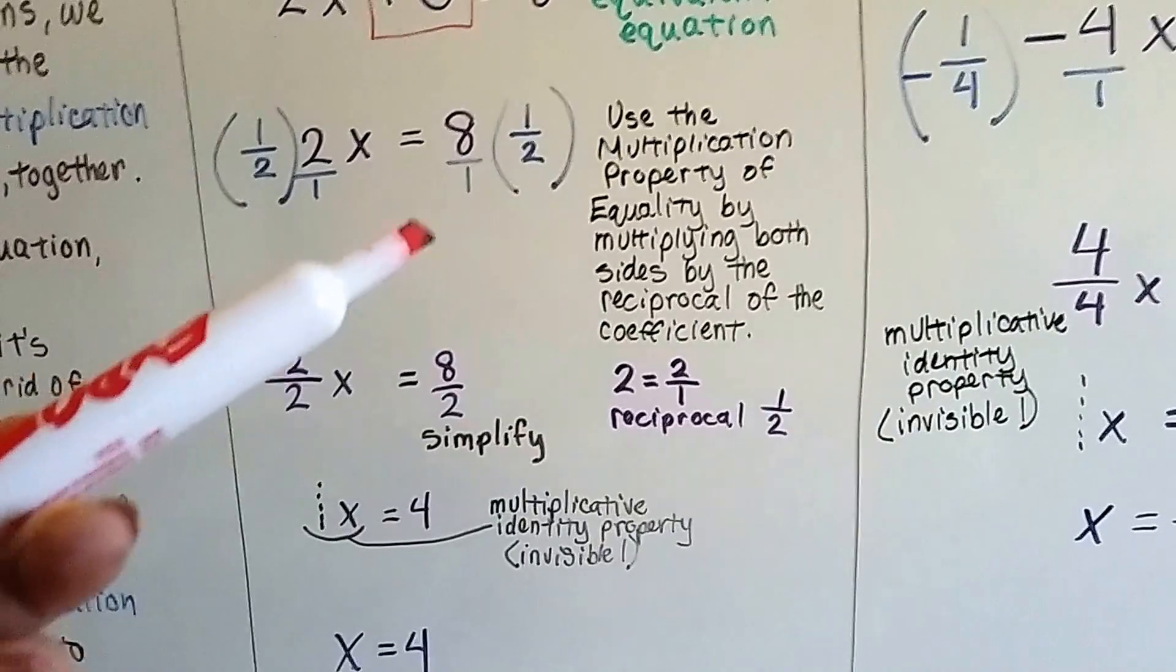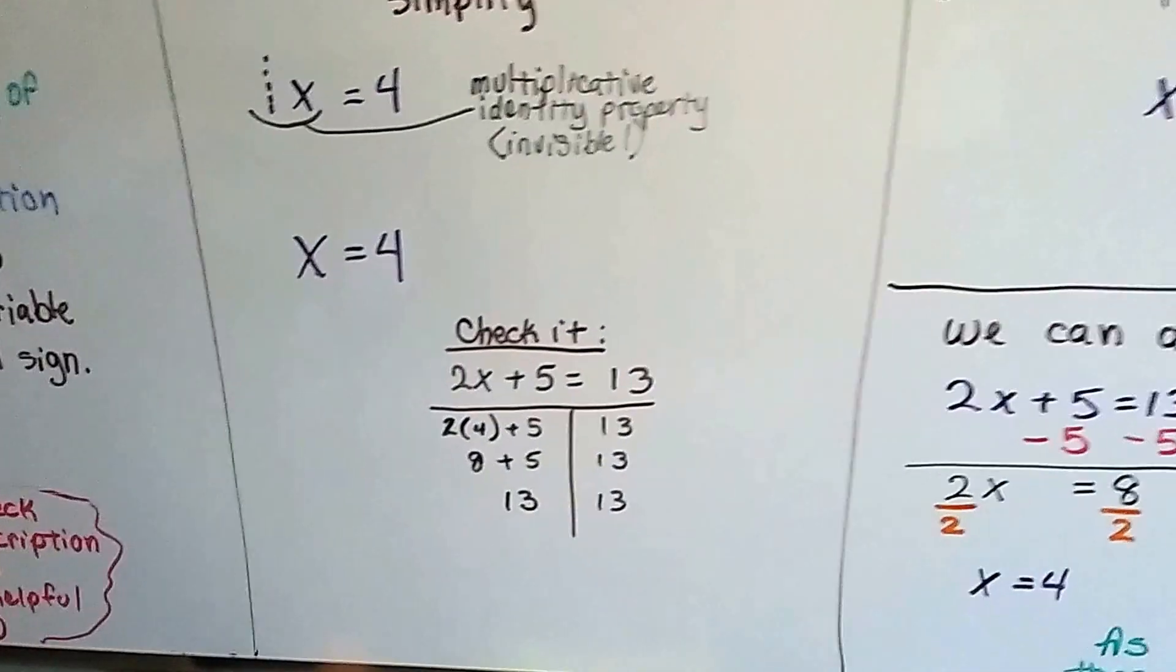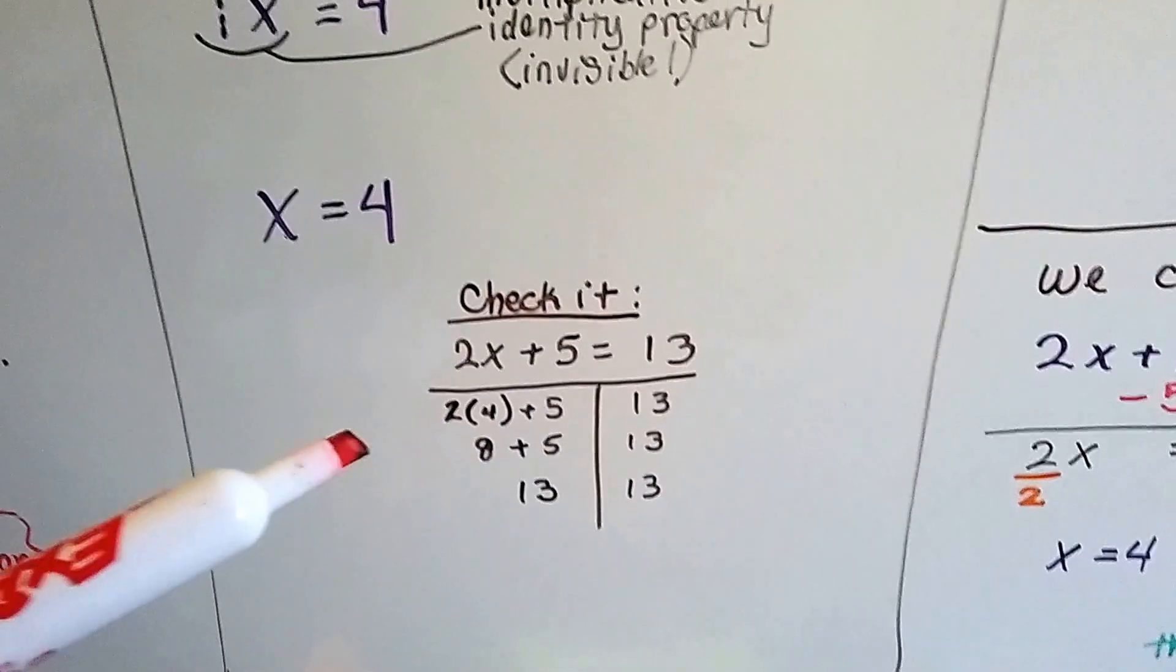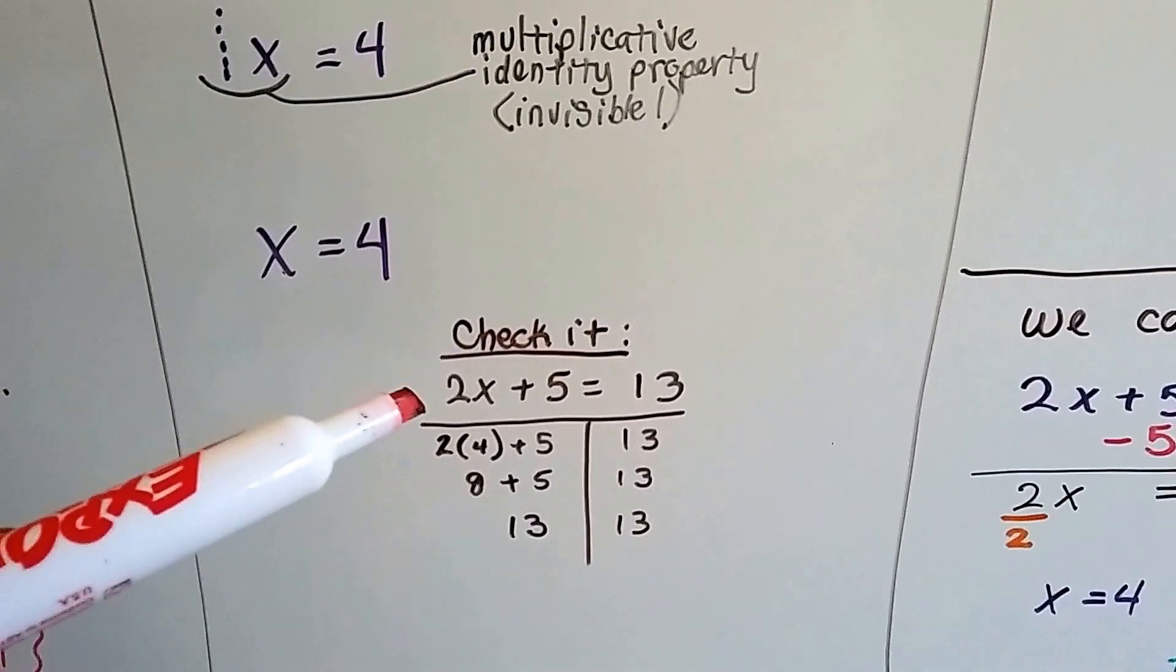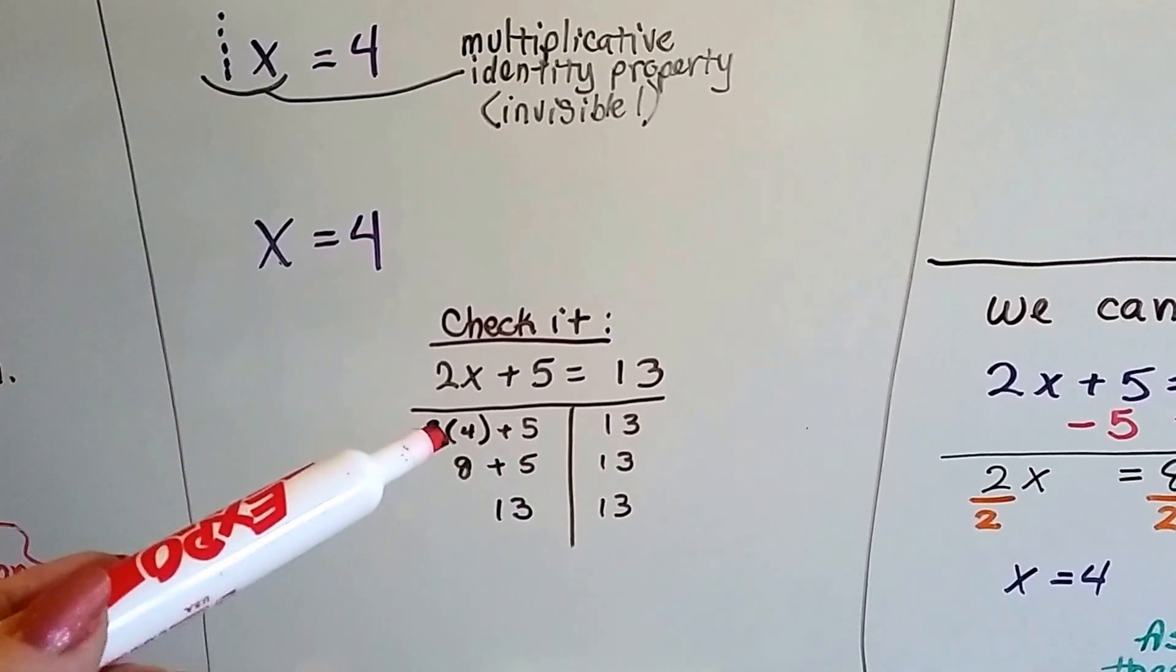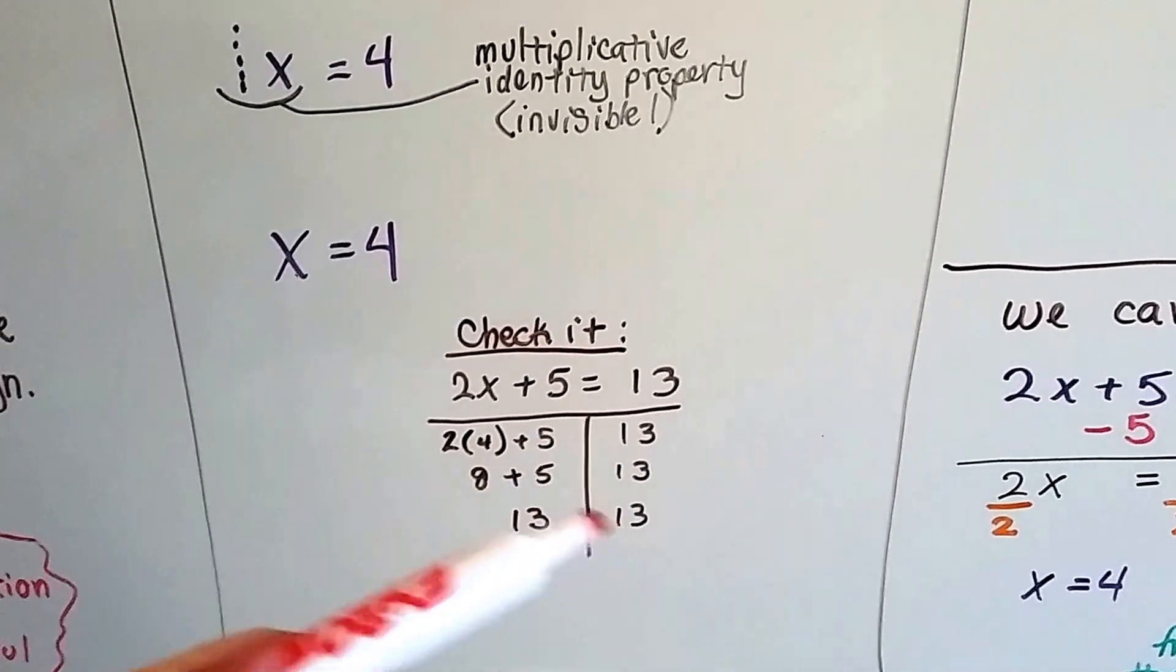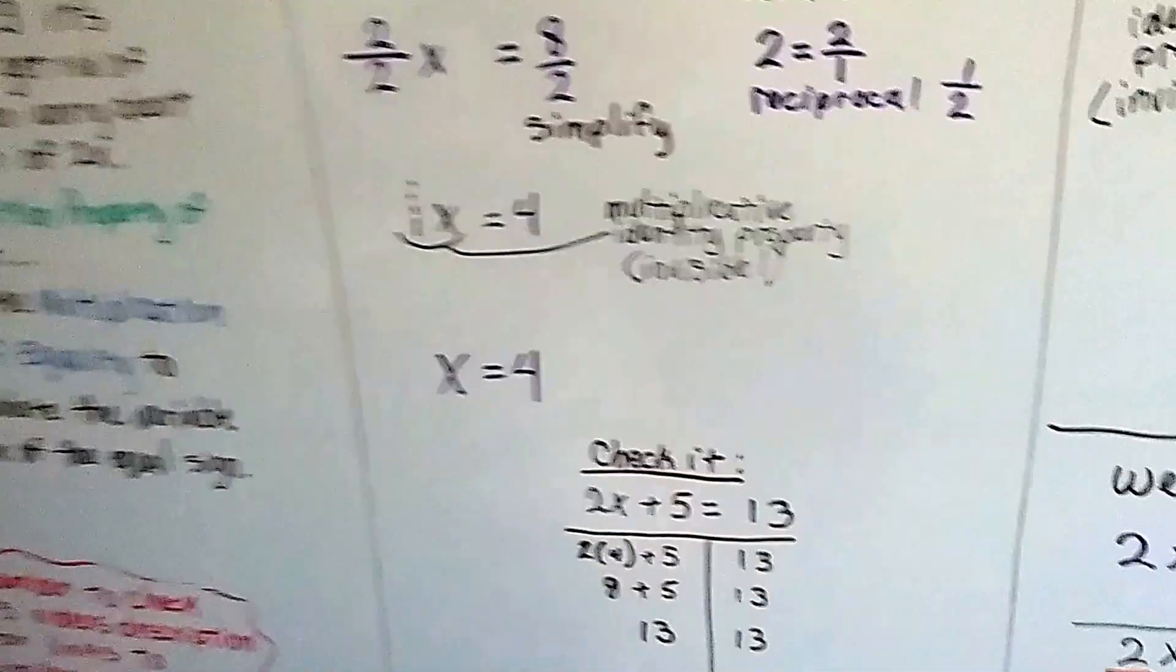They're not all going to be this easy. We're going to come across some that are really difficult, and you're going to need to check it to make sure the math was correct, especially if the numbers were bigger. So here's our equation. 2x plus 5 equals 13. We plug in x equals 4 into the equation. 2 times 4 is 8, plus 5 is 13. 13 is 13. Yep, we did it right.